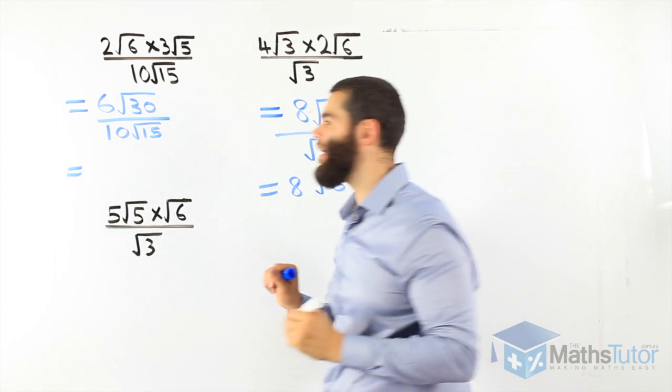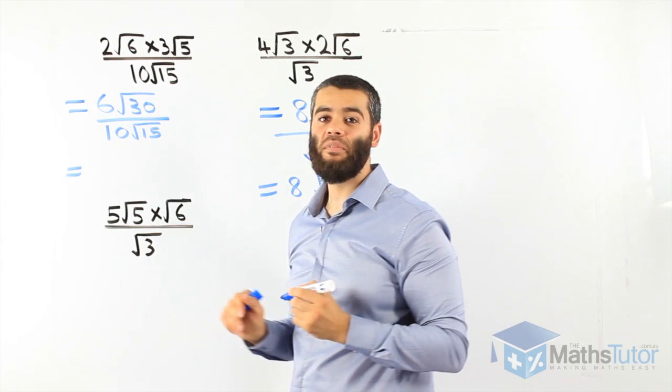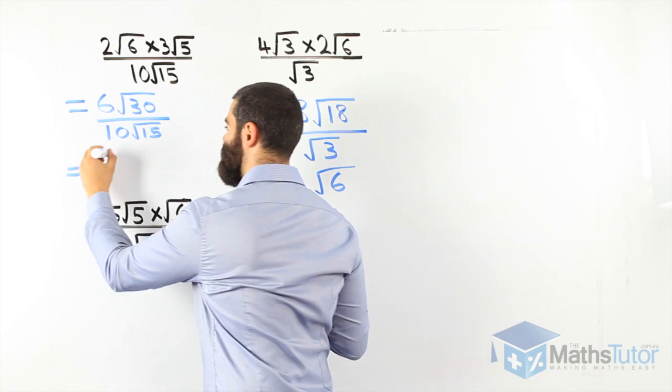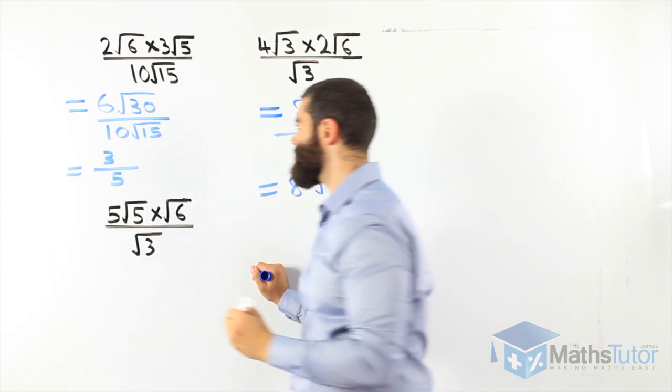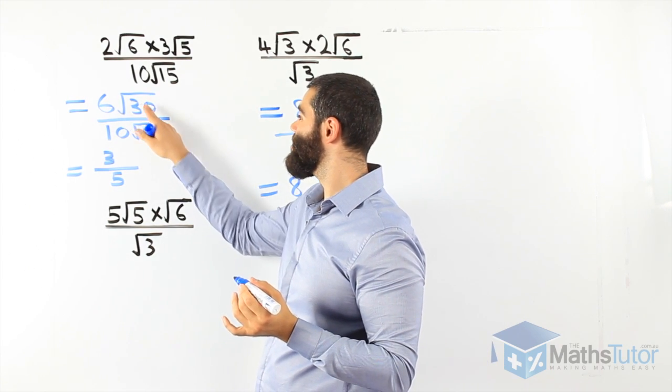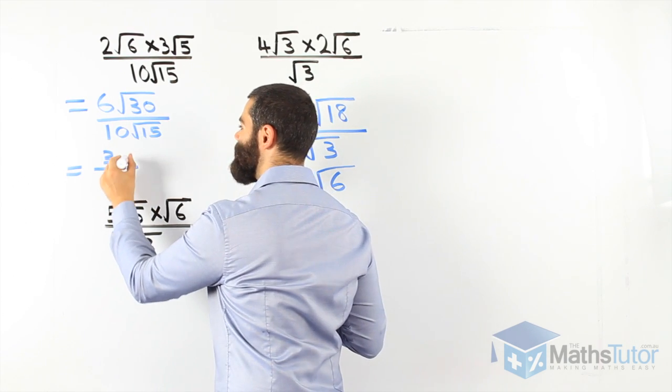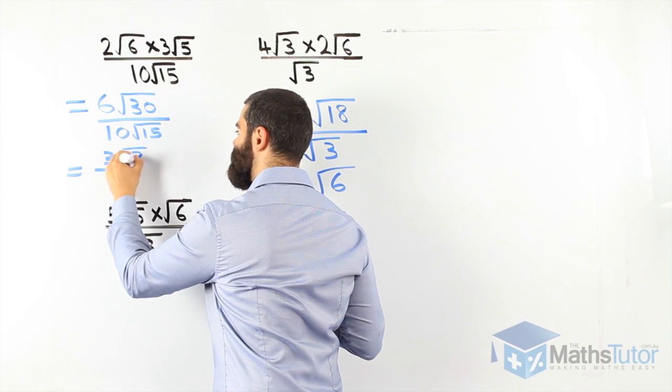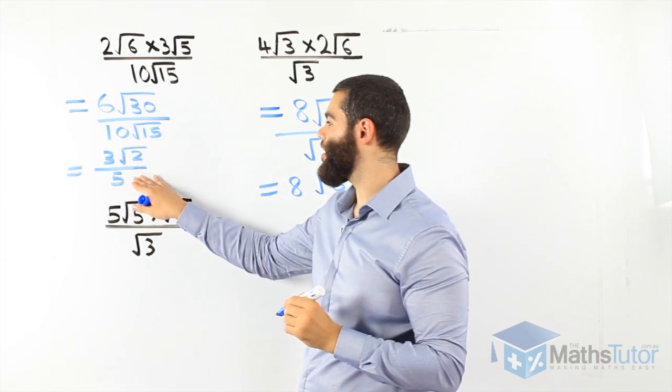Can we simplify any more? Can we simplify? Yes, we can. Again, 6 over 10 can be simplified. 6 over 10 is 3 over 5. Now we can simplify the surds. Well, yes, again, 30 divided by 15. We can simplify that. Root 30 divided by root 15 is root 2. So our final answer is 3 root 2 divided by 5.